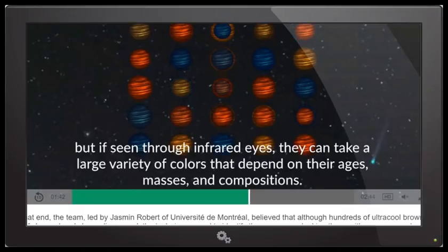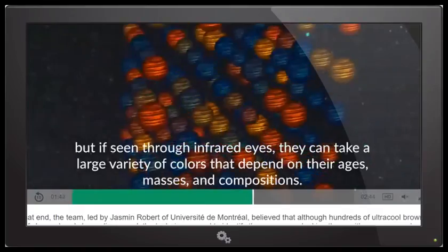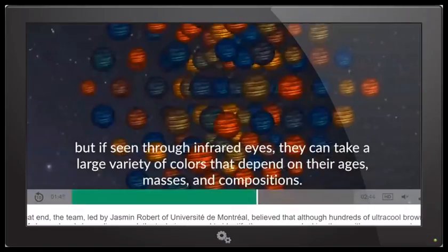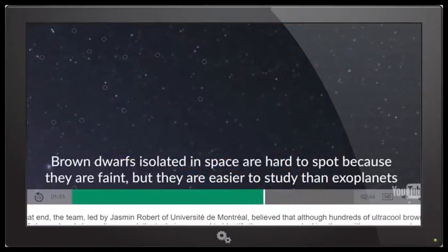So, there is a lot of information for the scientists to actually study if given the right equipment. Goes on to further say that brown dwarfs isolated in space are hard to spot because they are faint, but they are easier to study than exoplanets.